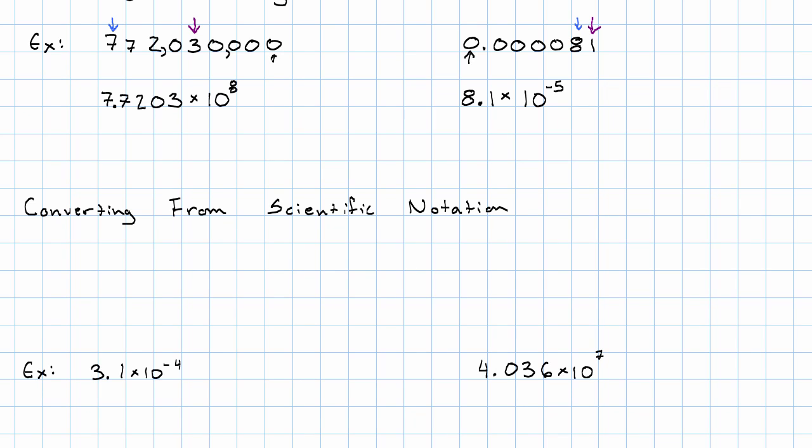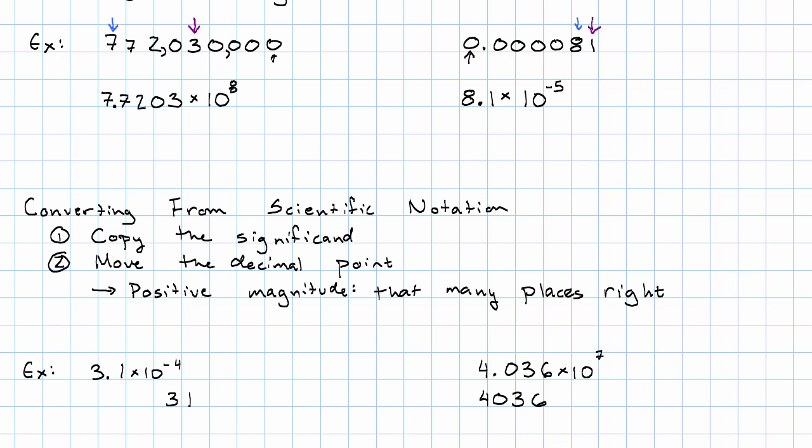To convert from scientific notation, I'm just going to do the multiplication. First, I'm going to just copy the significand. And then I'm going to move the decimal point. If I have a positive magnitude, I'm going to move that many places to the right. So magnitude 7, I start where my original decimal point was, and I go 1, 2, 3, 4, 5, 6, 7. And I fill in a zero in each space I left. Now I'm going to check, because this is the sort of place I could make mistakes. Is the order of magnitude really 7? 0, 1, 2, 3, 4, 5, 6, 7.